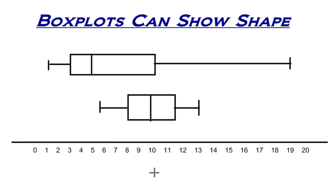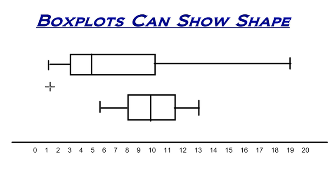The other thing that is nice about box plots is that you can use them to help describe the shape of a distribution — whether it's bell-shaped, normal-shaped, or skewed left or skewed right. I definitely have two different shapes here.